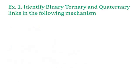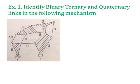Now we will see one example to identify binary, ternary, and quaternary links in a mechanism. First we give numbers to the various links. Link number 1 is fixed, then link numbers 2 through 11. So there are 11 links in the mechanism. Now we will see which are binary, ternary, and quaternary among these.